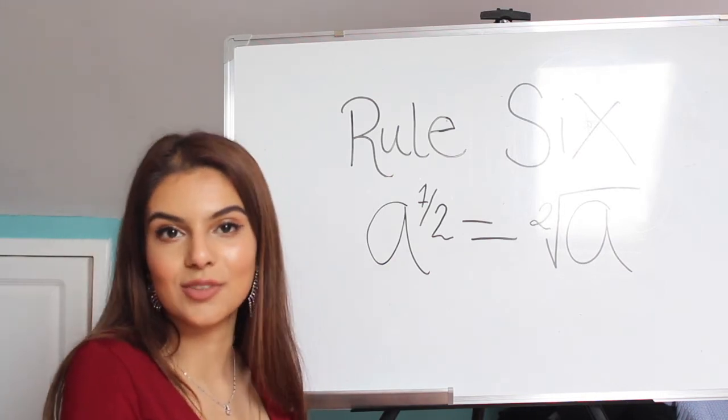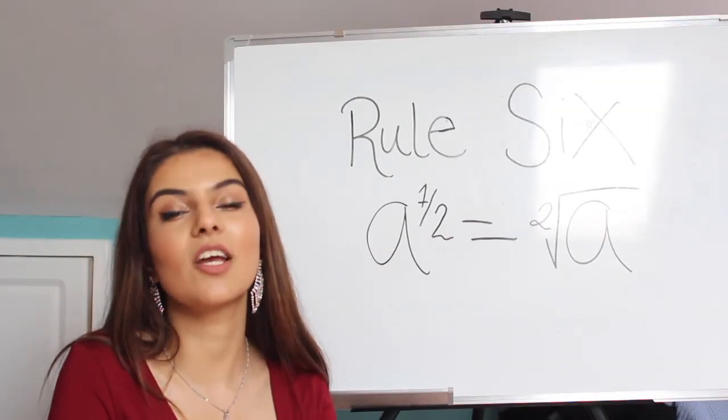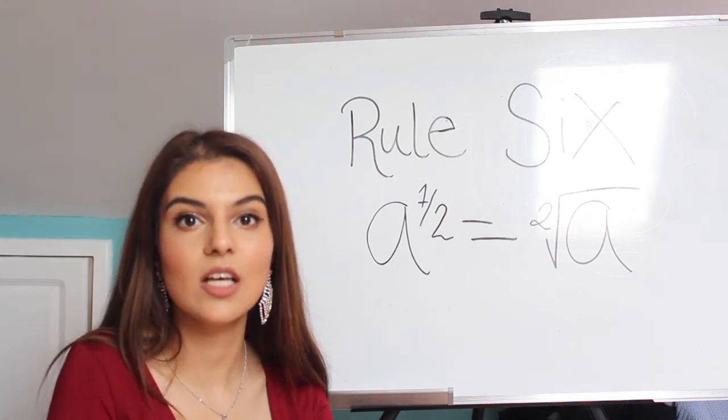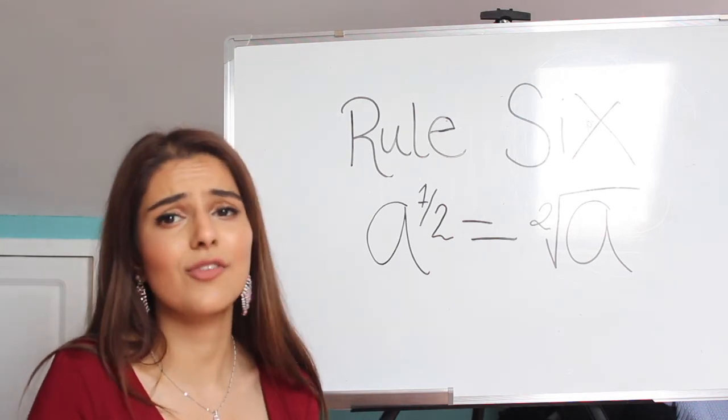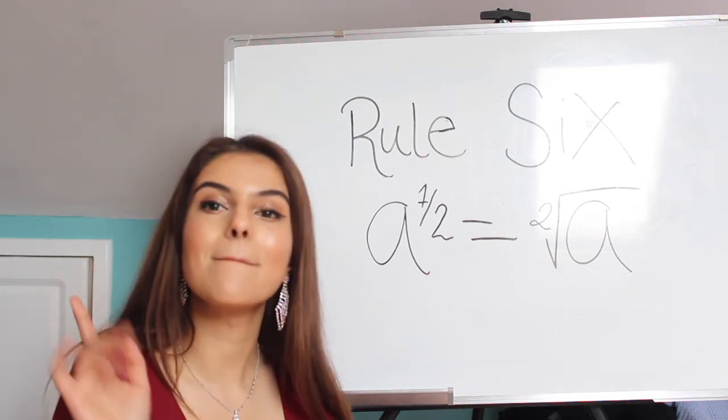That's the end of all 6 rules. Hopefully that made indices a bit easier. And seeing as this was just the basics, I'm going to be making a video with more harder examples, where the rules are modelled together, and all of that good stuff. So, thanks for watching! Bye!